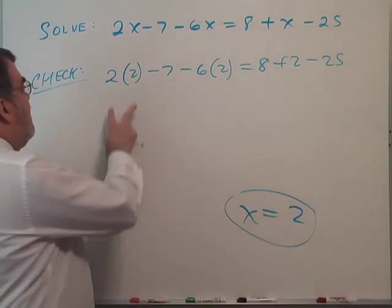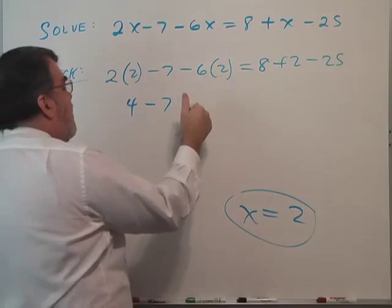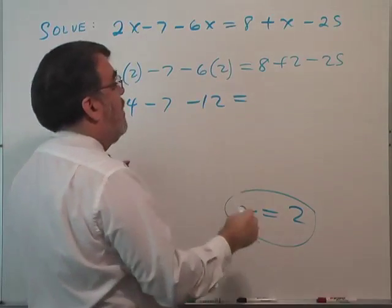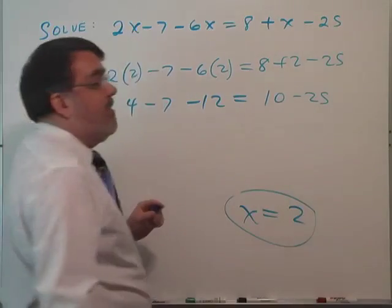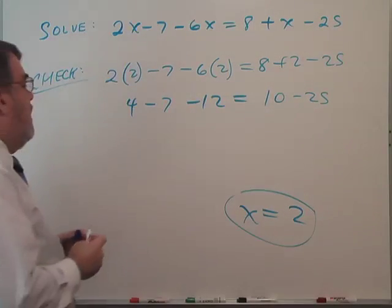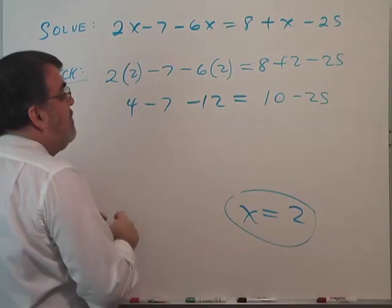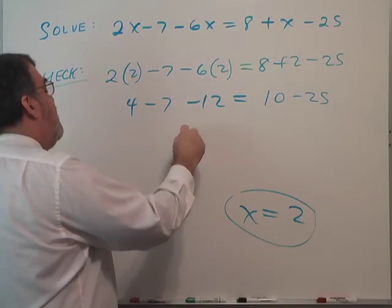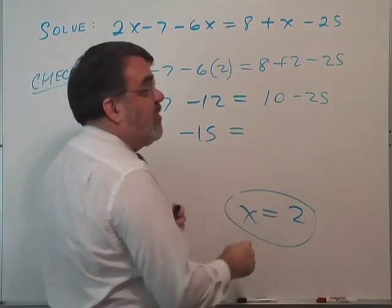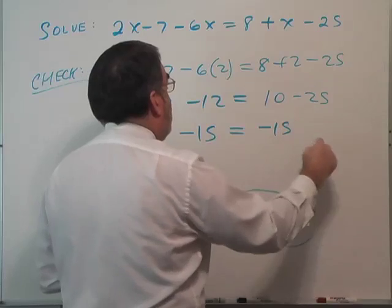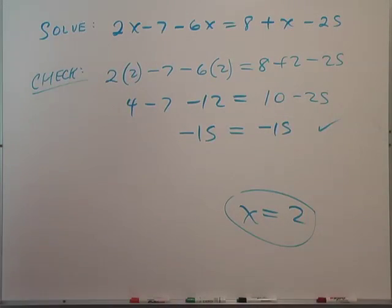2 times 2 minus 7 minus 6 times 2 equals 8 plus 2 minus 25. And this won't take much. Let's see, 2 times 2 is 4, minus 7, minus 12. Equals 8 plus 2 is 10, 10 minus 25. And here I've got 4 minus 19. 4 minus 19 is negative 15. And 10 minus 25 is also negative 15. So it checks. That's the correct answer.